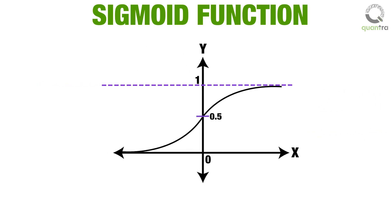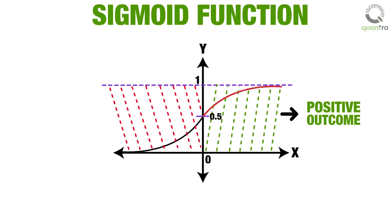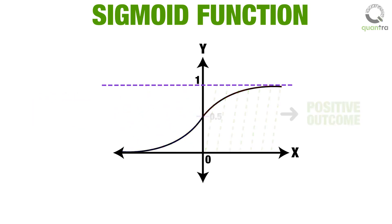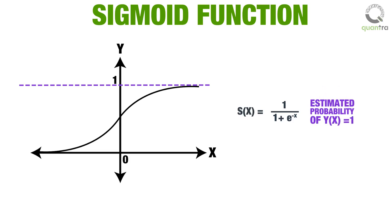When the sigmoid function results in a value greater than 0.5, we predict a positive outcome. Conversely, when the sigmoid function returns a value less than 0.5, the outcome is predicted to be negative. The sigmoid function is a special case of the logistic function and is given by the formula: 1 divided by 1 plus e raised to the power of minus x. The number that S(x) generates as an output is treated as the estimated probability that y equals 1 on an input x.